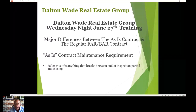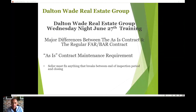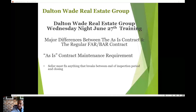The second difference has to do with the as-is contract maintenance requirements. If, between the time of the home inspection and closing, the air conditioner broke, the seller is obligated to fix it. Anything that worked at the time of the home inspection needs to still work. If something isn't working at the final walkthrough, the seller is obligated either to fix it or put money into escrow to get it fixed. That is not the same with the FAR/BAR contract.